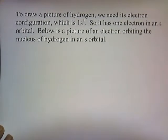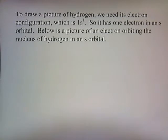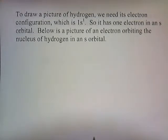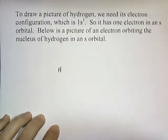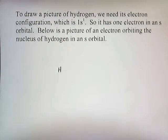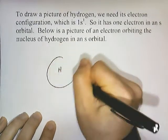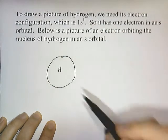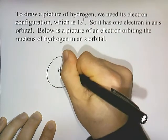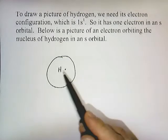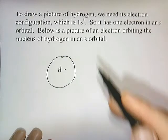To draw a picture of hydrogen, we need its electron configuration, which is 1s1 — one electron in the S sublevel. So it has one electron in an S orbital. I'm going to draw a picture of an electron orbiting the nucleus of hydrogen in an S orbital. I'll draw the letter H, which represents the nucleus of hydrogen. It's in an S orbital, which is a sphere, so I'll draw a little sphere around it. And there's one electron, so I'll put a single dot.